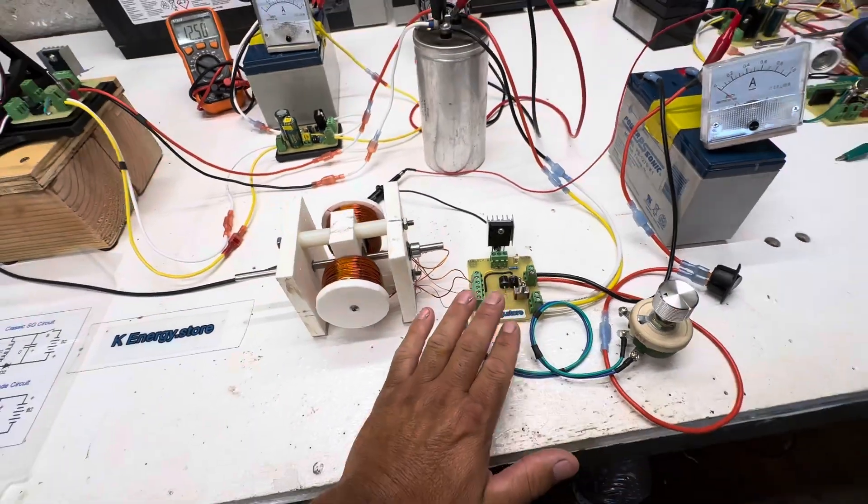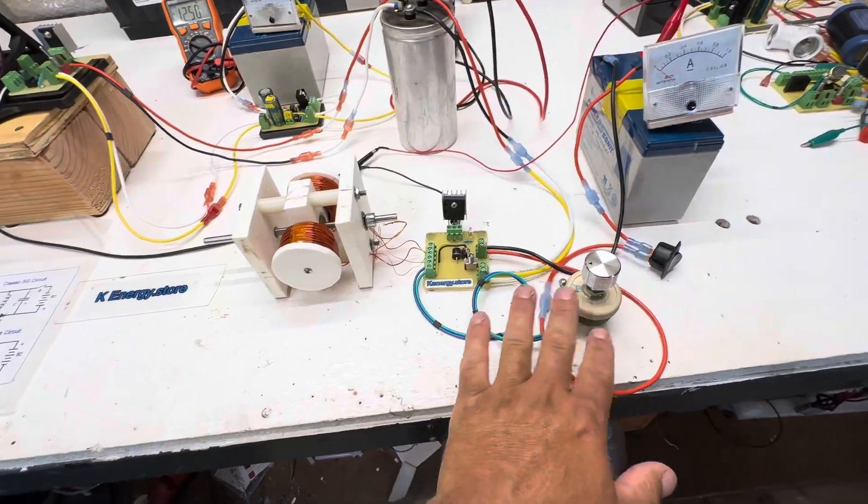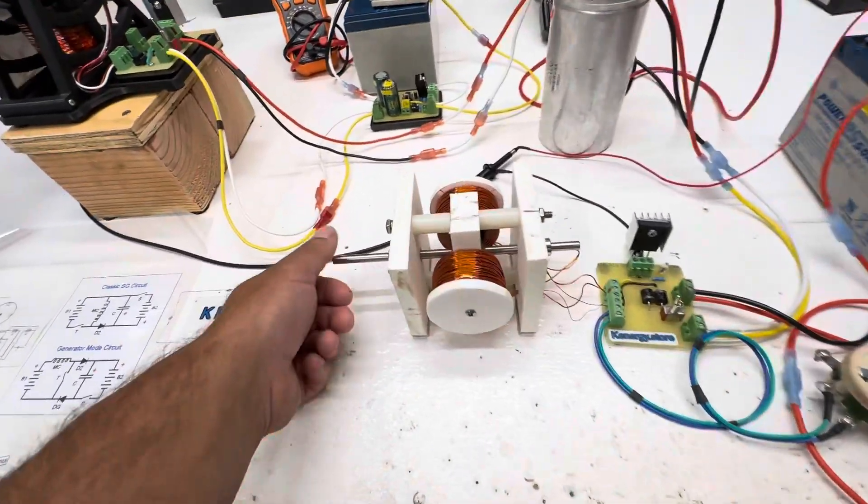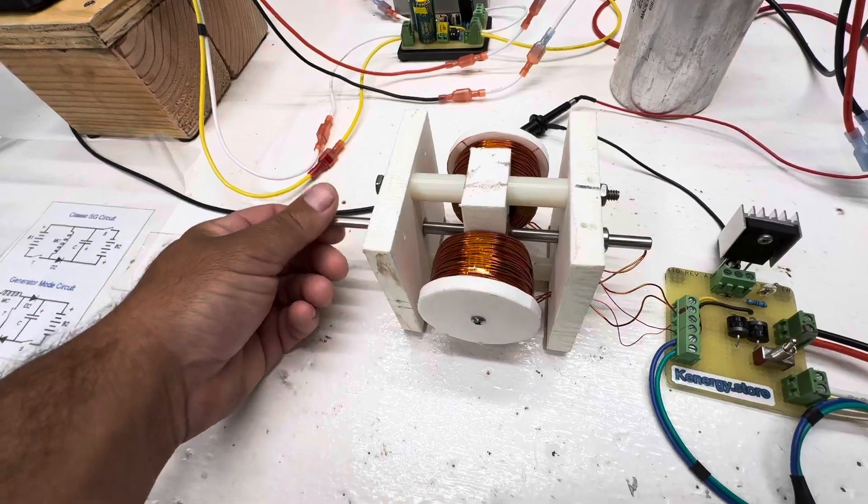So yeah, this is just a simple little Bedini circuit with generator mode switch. I got the pot kind of dialed in. This is just a basic little window motor.